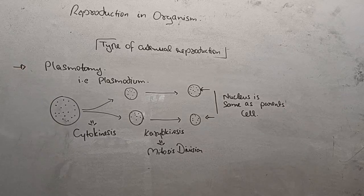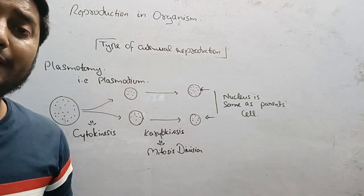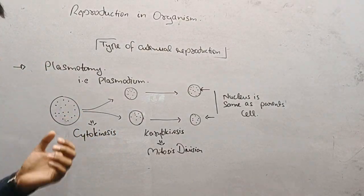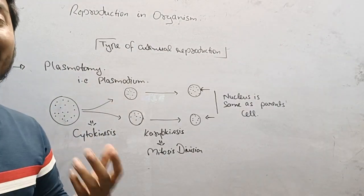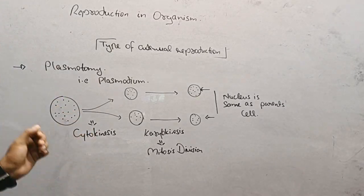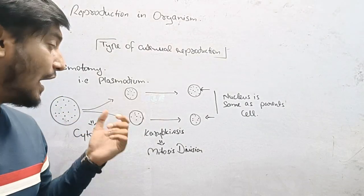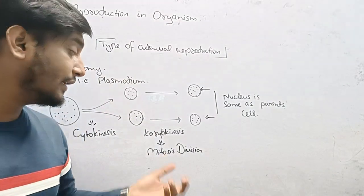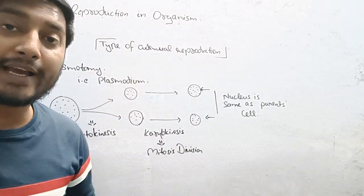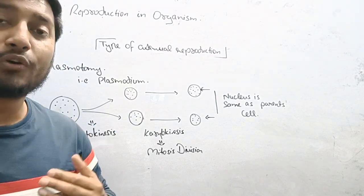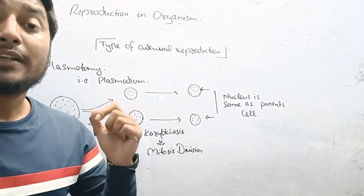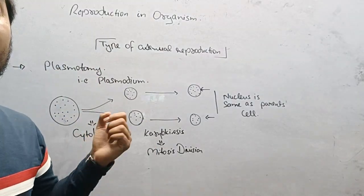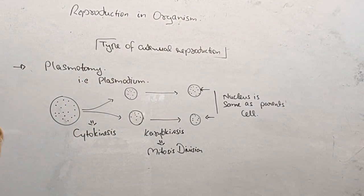The process of plasmotomy is seen in plasmodium where the main body gets divided into two daughter cells by the process of cytokinesis, and each daughter cell undergoes karyokinesis by following the process of mitosis and consists of the same number of nuclei which is present in the parent body.